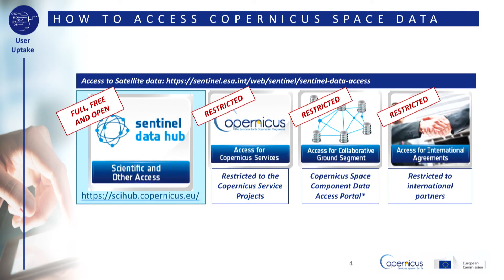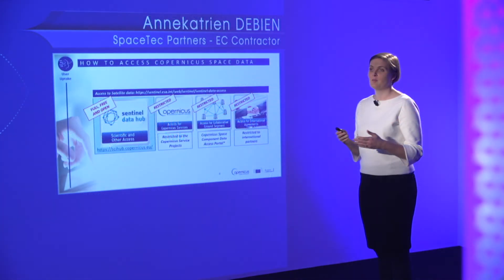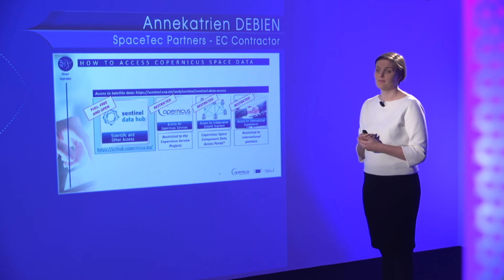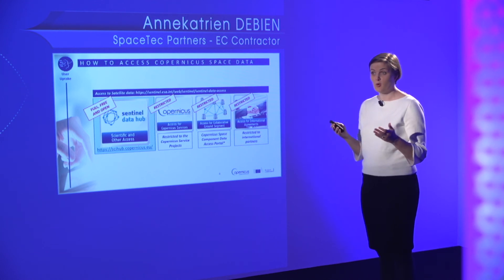The full, free and open satellite data from the Sentinels can be accessed by everyone through the European Space Agency's Sentinel Data Hub, and by dedicated access mechanisms established by EUMETSAT. Copernicus also provides access to other commercial satellite images, but that access is restricted to certain user types. If you want to find out more, or see how you can access all the Copernicus data and information, check out our Access to Data and Information module.